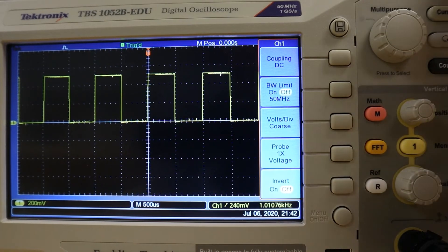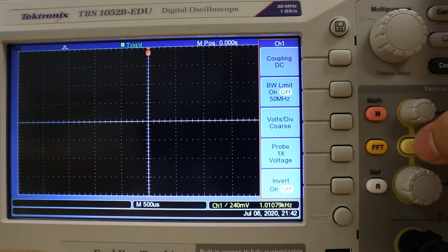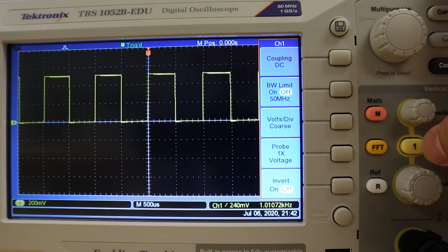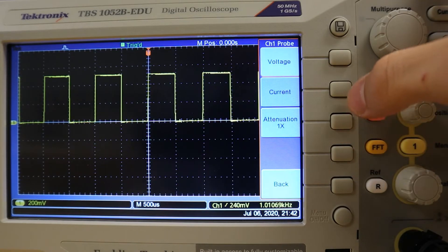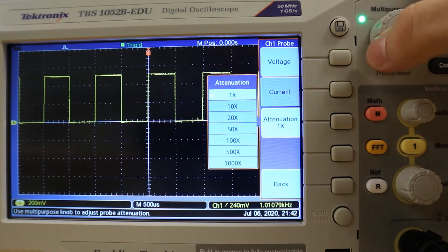In this case, hitting the channel menu button will turn the trace on or off, as well as provide options for selecting coupling type or attenuation factors. Since this probe is designed to decrease signal voltage by 10 times or 10x, the settings of this oscilloscope must be changed to coincide with this attenuation factor.